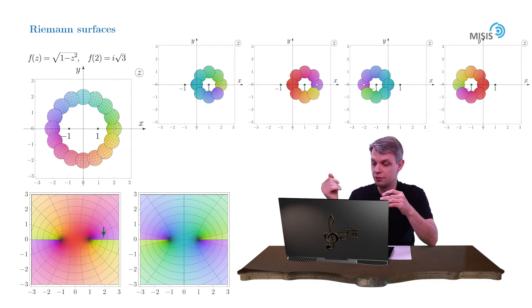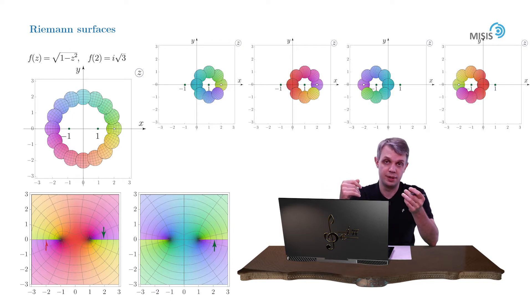For example, the upper bank of the right branch cut of the first Riemann sheet should be glued to the lower bank of the right branch cut of the second Riemann sheet and vice versa. And the same for the left branch cut.